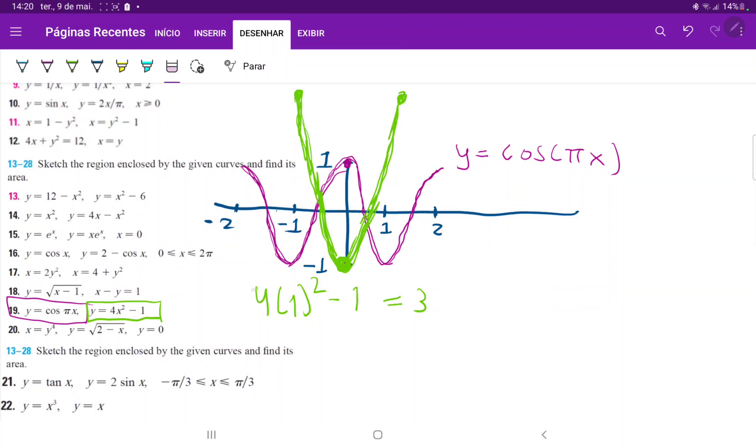We can see here that the area between them is this section over here. To set up the integral, we need to find the bounds. The bounds is where they intersect, this point and this point, which should be the same height since they are symmetric. Let's set these equations equal to each other.